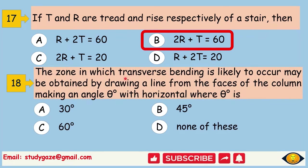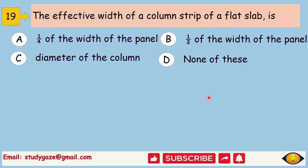The zone in which transverse bending is likely to occur may be obtained by drawing a line from the faces of the column making an angle theta degree with horizontal where theta is. Answer is 45 degree. The effective width of a column strip of a flat slab is. The answer is 1 by 2 of the width of the panel.